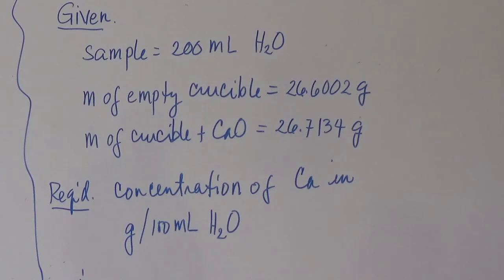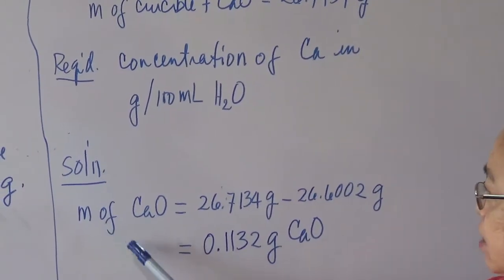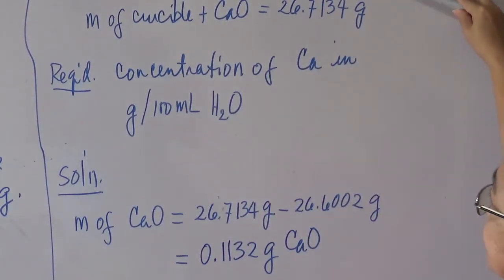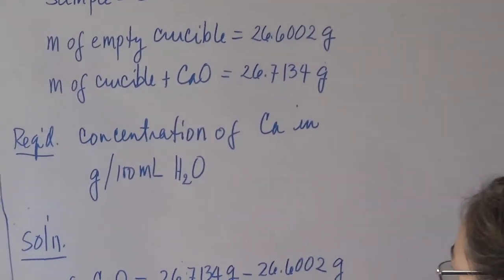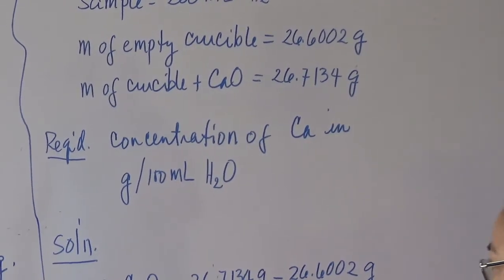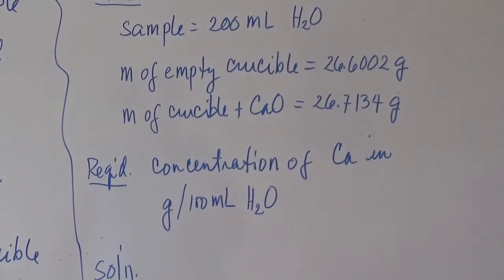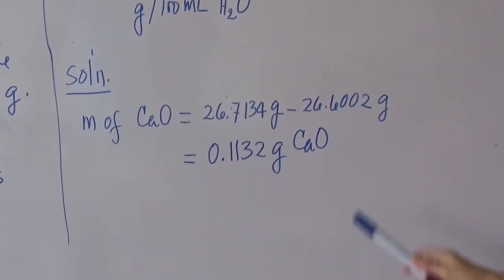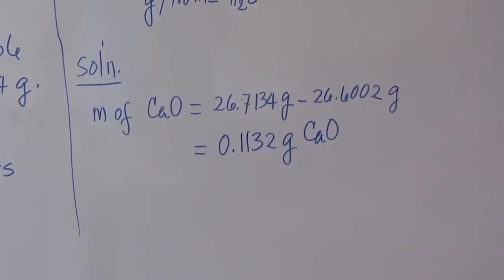Since we need to determine the mass of calcium oxide only, we subtract the empty crucible mass from the crucible-plus-calcium-oxide mass. Getting the difference between these two values: 26.7134 − 26.6002 = 0.1132 g of calcium oxide. So the calcium is in the form of calcium oxide, and we have 0.1132 g of it.